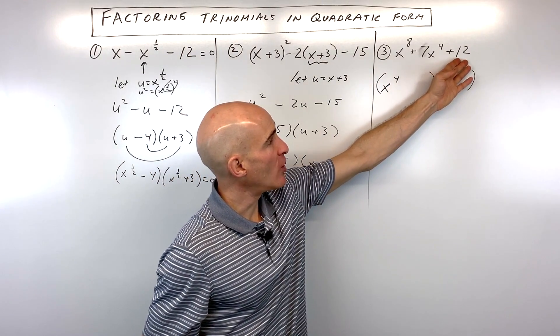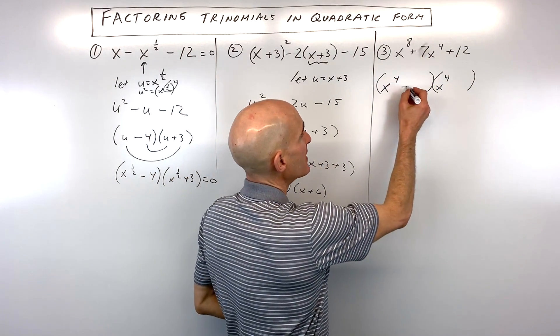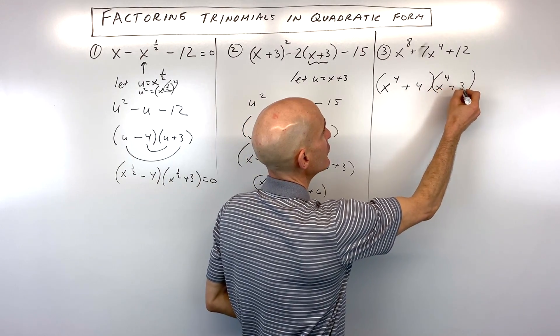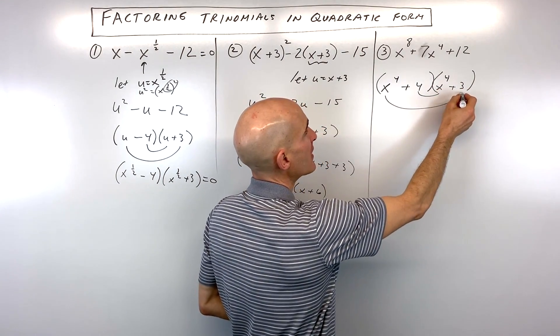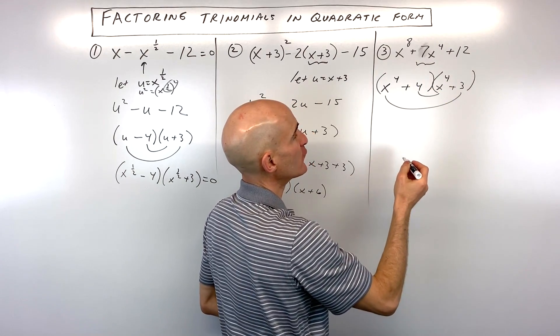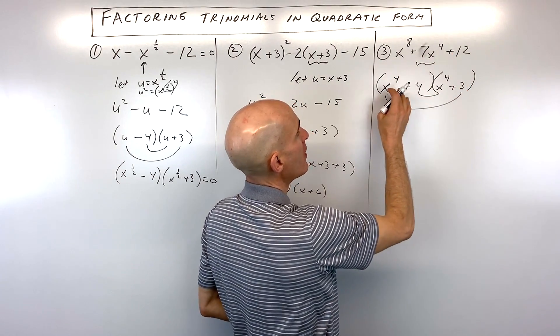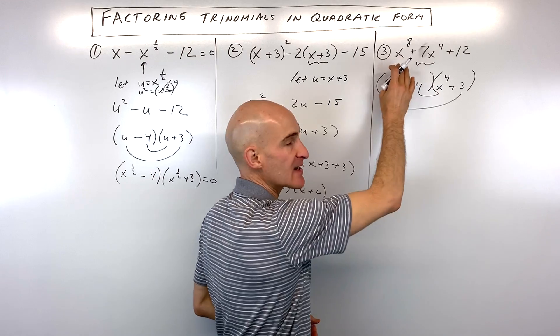Now we just have to say what two numbers multiply to twelve but add to seven. That's going to be four and three. And if you want to double check your work, you can see you've got four x to the fourth, three x to the fourth, which adds up to seven x to the fourth. Four times three is twelve, and x to the fourth times x to the fourth is x to the eighth.